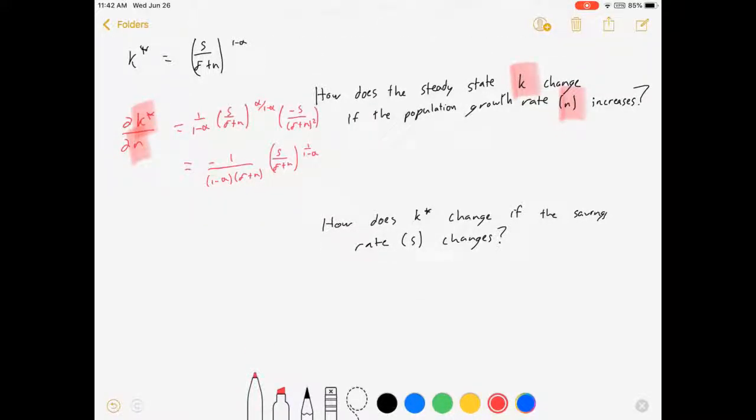A different kind of question we could ask. The other one I have here as an example, how does k star change if savings changes? To set that up, I'm going to start in the same way, dk star ds.